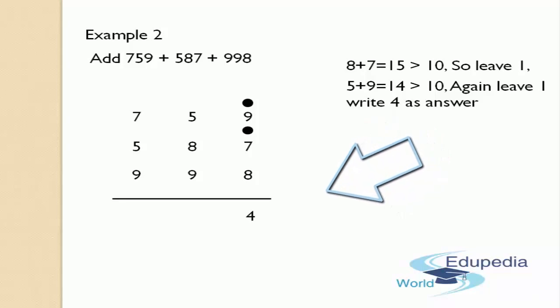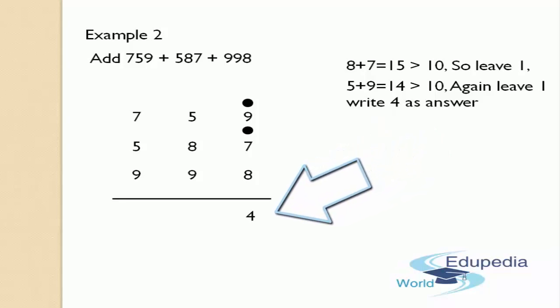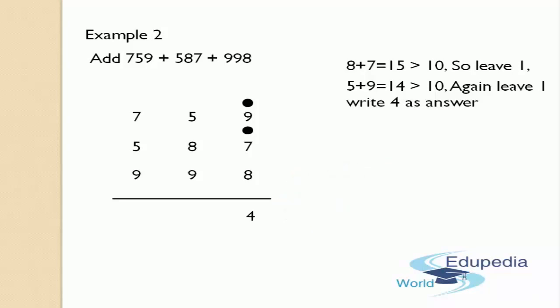After writing the answer 4 in the answers place, now count the number of dots that you have got in the first column. How many dots are appearing in the first column? There are just only 2. This count should be added to the next column, that is the tens place digit. That digit is 9 — now add 2 to 9. When you add 2 to 9, you are going to get 11.